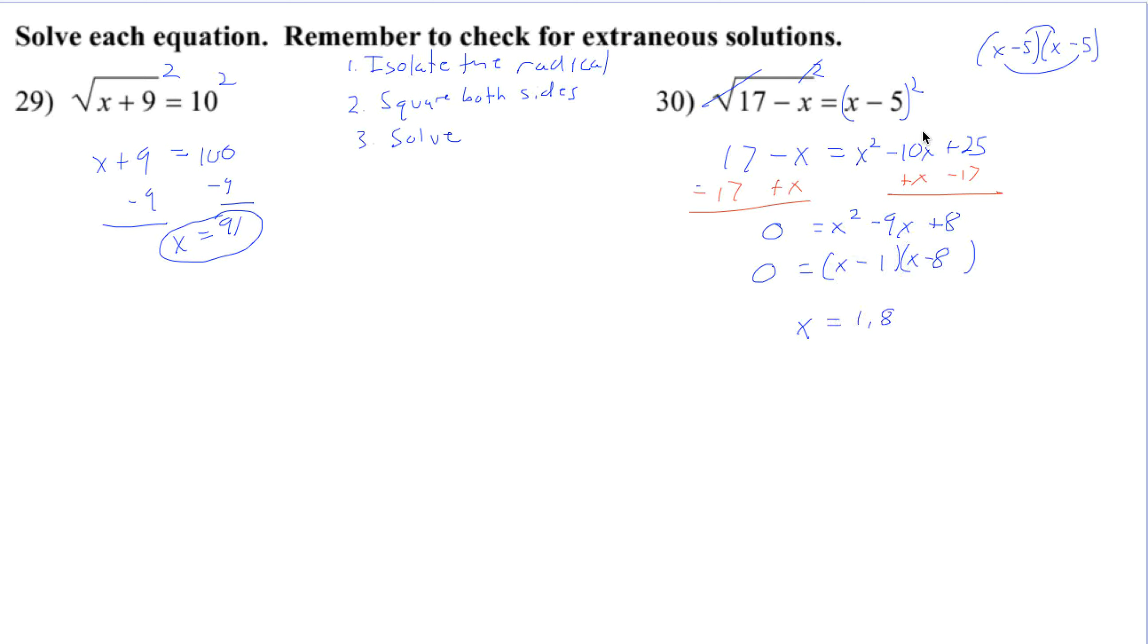We do have to check for extraneous solutions. So we plug back in, putting in 1. So we're going to check. We're going to check x equals 1. We got the square root of 17 minus 1. And we're checking, does that equal 1 minus 5? 17 minus 1 is 16. Square root of 16 is 4. 1 minus 5 is negative 4. Those are not equal, so 1 does not work.